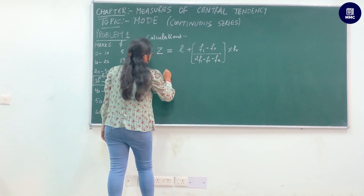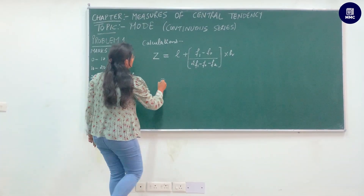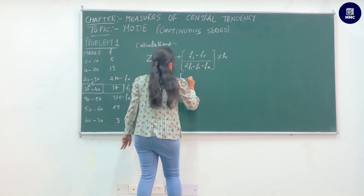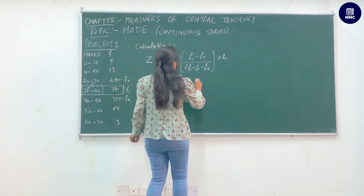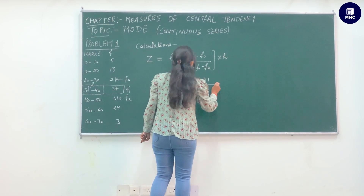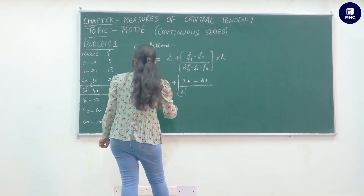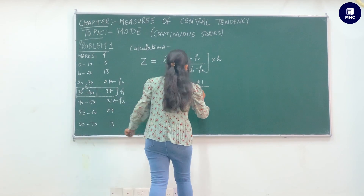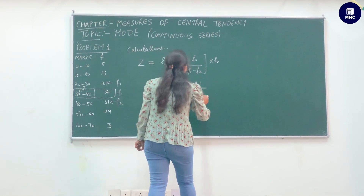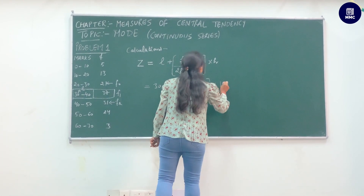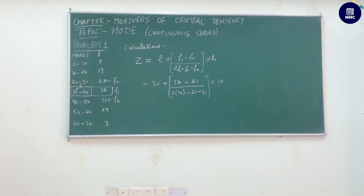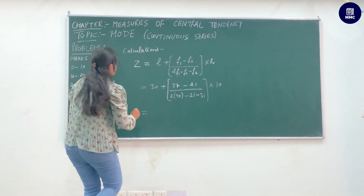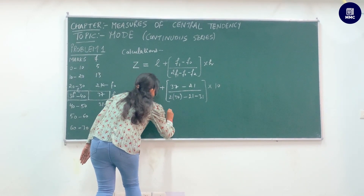Now put all values into the formula. L is 30, f1 is 37, f0 is 21, f2 is 31, and h is 10. So: Z = 30 + (37 − 21) / (2×37 − 21 − 31) × 10. When you do the calculations, you will get the answer as 37.21.